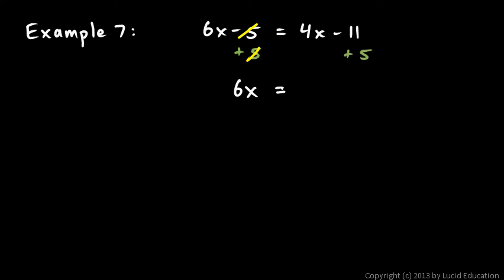And over here, I have 4x minus 11 plus 5. Well, minus 11 plus 5 is minus 6. So, the right side is now 4x minus 6.